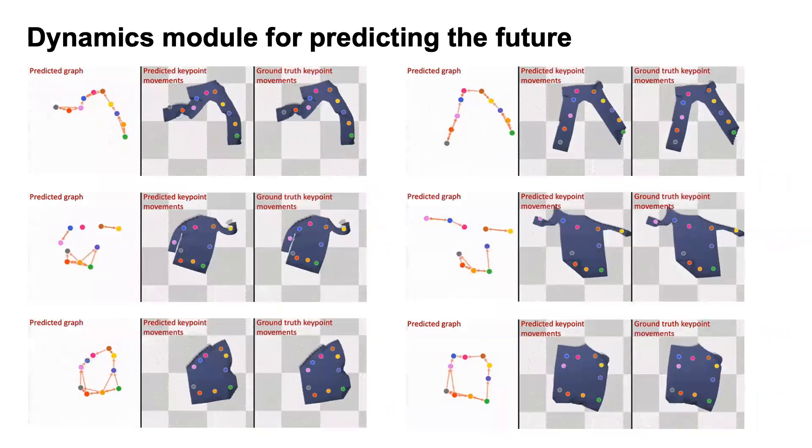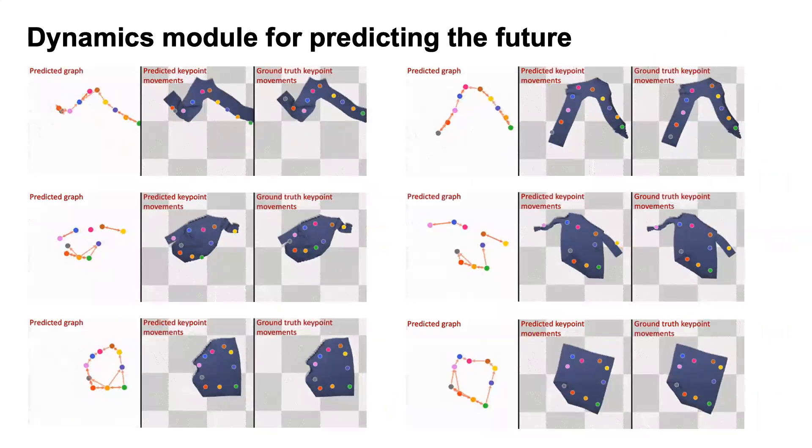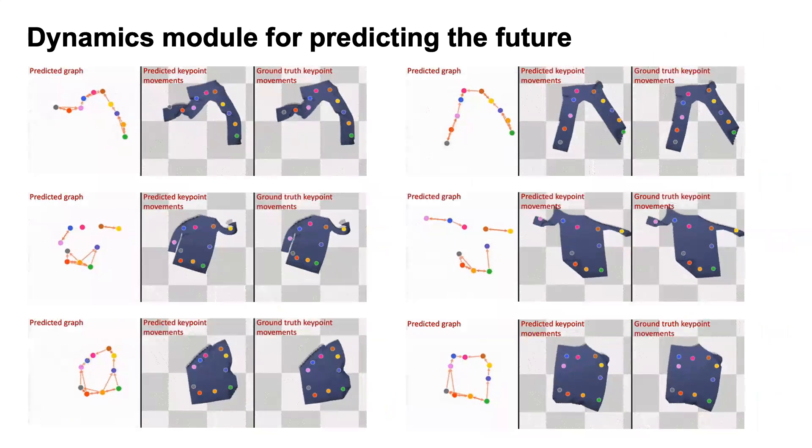The dynamics module predicts the future movements of the key points by conditioning on the current state and the inferred causal graph.